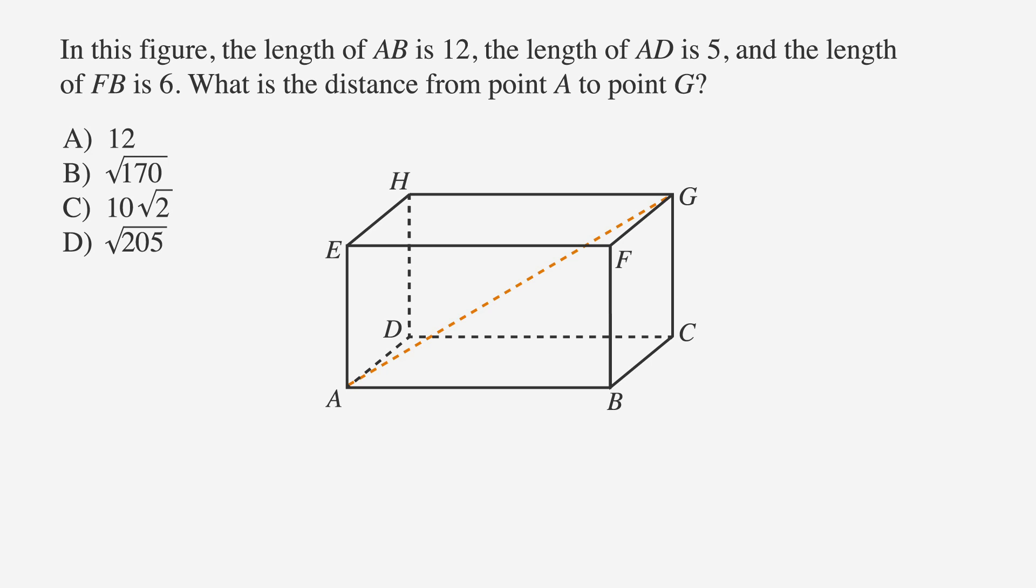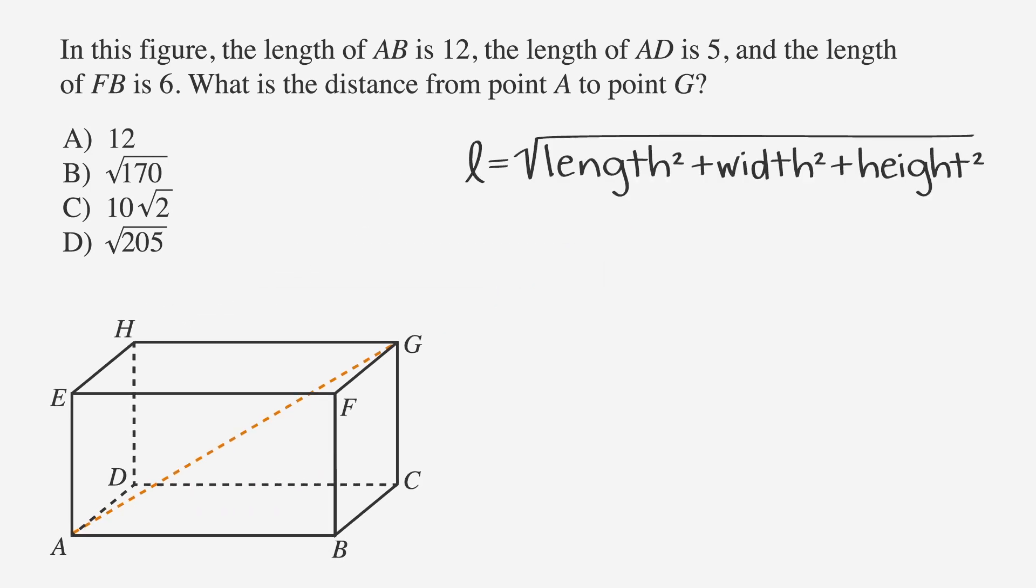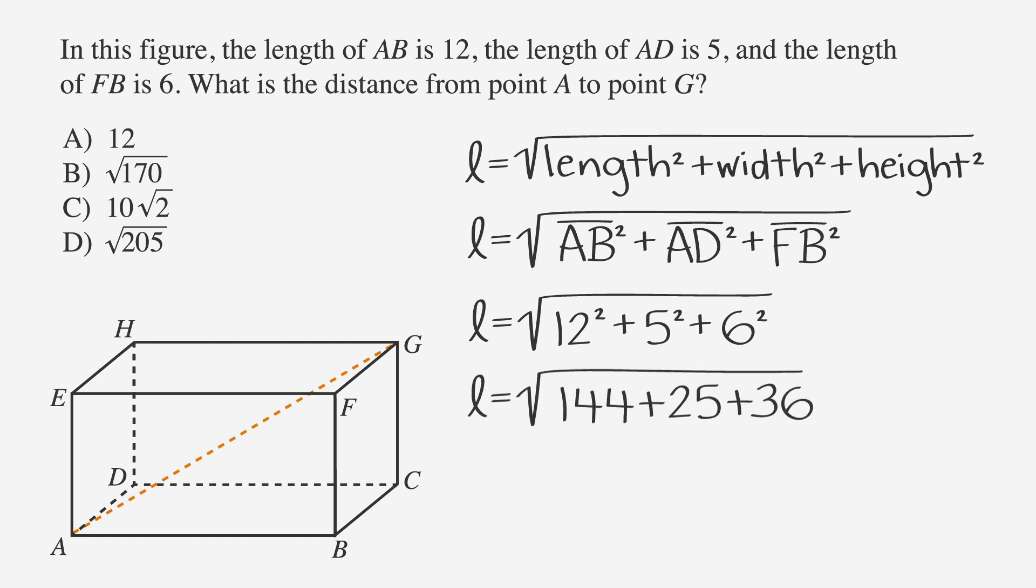Luckily, there's a quick and easy formula to find that information. The length of the long diagonal is equal to the square root of the sums of the squares of the sides. So in this case, our equation becomes L equals the square root of AB squared plus AD squared plus FB squared. Substituting our values for each side, we get that L equals the square root of 12 squared plus 5 squared plus 6 squared. That's the square root of 144 plus 25 plus 36. A little bit of adding, and we get L equals the square root of 205.